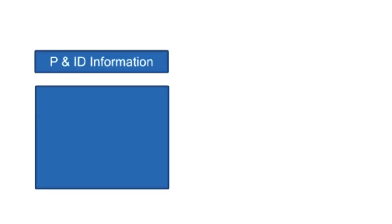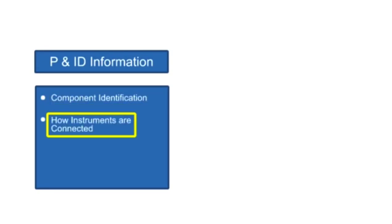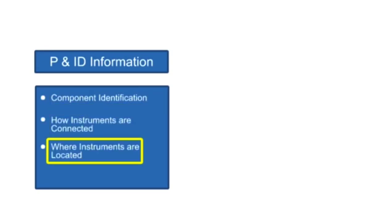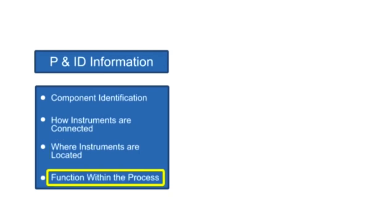Piping and instrumentation diagrams provide information that include component identification, how instruments are connected, where instruments are located, and their function within a process.